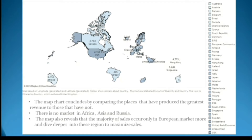The last chart is a map chart with reference to question number 4. This map chart concludes by comparing the places that have produced the greatest revenue to those that have not. It also represents that there is no market in Africa, Asia, and Russia, and reveals that the majority of sales occur only in the European market. We can dive deeper into this region to maximize sales.